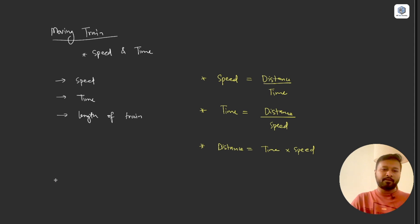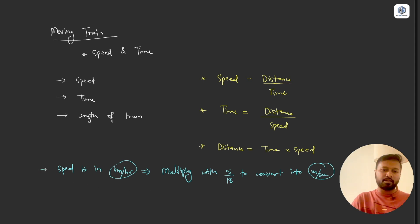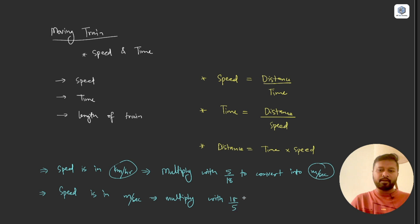Apart from those, we use unit conversion formulas. If speed is in kilometers per hour and you want to convert it to meters per second, multiply by 5/18. Conversely, if speed is in meters per second and you want to convert it to kilometers per hour, multiply by 18/5. These are the major conversions you need to know.